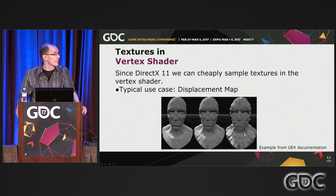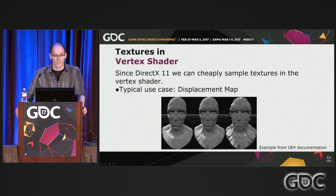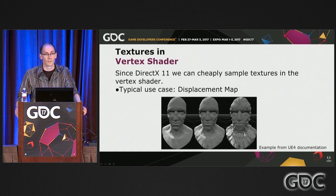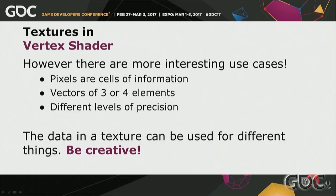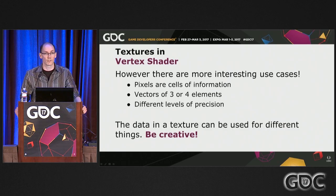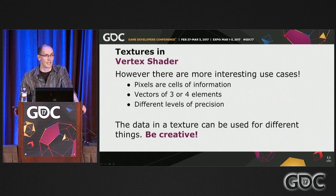Since vertex shader 11, we can cheaply sample textures in the Vertex Shader. A typical use is a displacement map — we have the original mesh, but with the texture we can create a morph target and blend from the original mesh to new geometry, displacing vertices depending on an amount set in that texture. However, if you think of textures as matrices of vectors, pixels transform into cells of information — like vectors of three or four elements — with different levels of precision depending on the number of bits you're using. So let's get creative about using those textures.